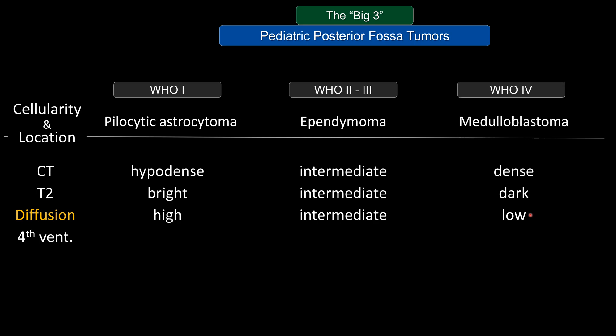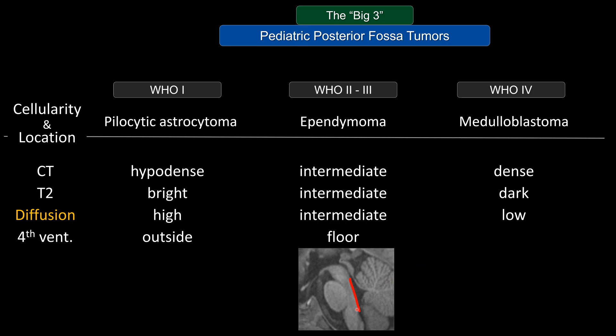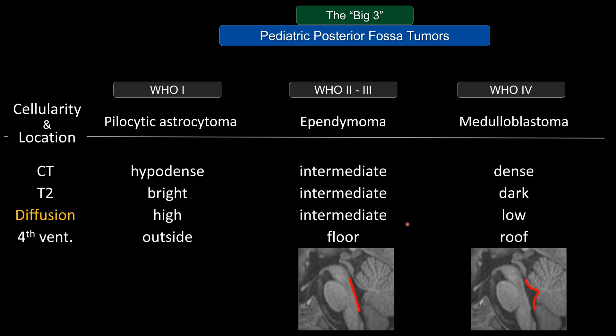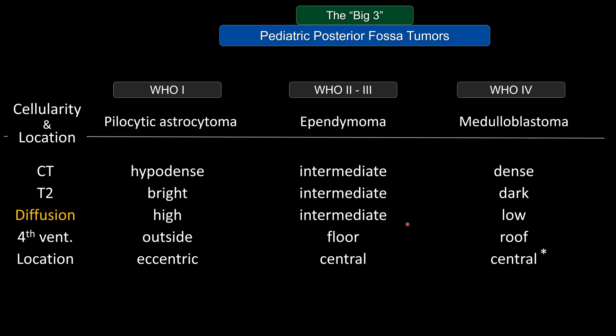Location-wise, pilocytic astrocytoma classically presents as an extraventricular tumor, outside the fourth ventricle. Classic ependymoma tends to present as an intraventricular lesion derived from the floor of the fourth ventricle, whereas classic medulloblastoma derives from the roof of the fourth ventricle and is also intraventricular. Pilocytic astrocytoma therefore tends to present as an eccentric tumor, while ependymoma and classic medulloblastoma tend to be midline. Note that sonic hedgehog and WNT subtypes of medulloblastoma tend not to present as midline tumors.